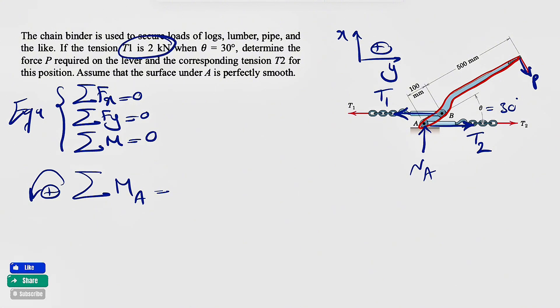We know T1 is two kilonewtons, so positive two is our force. We need to figure out the vertical distance from A to the line of action. We're going to make a right triangle here, where the hypotenuse is 100 millimeters, the angle is 30 degrees. This angle is theta, so this angle is also 30 degrees. The side that we're trying to figure out is 100 sine of 30 degrees.